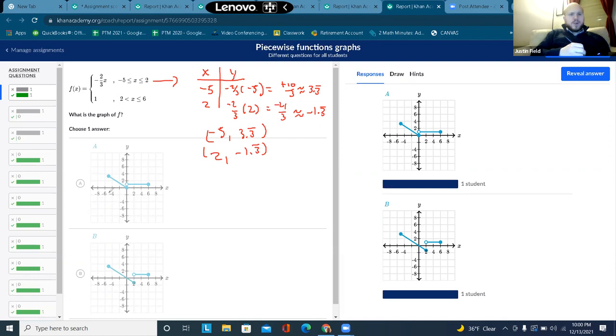Negative 5, oh, and it's including 2. So that's a closed circle on 2. Closed circles for both of these values. So 2, negative 1.3. So it's got to be B, because this point does not have 2, negative 1.3.